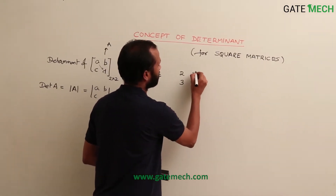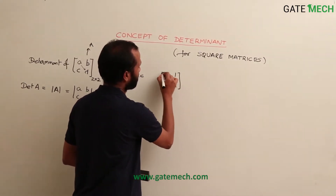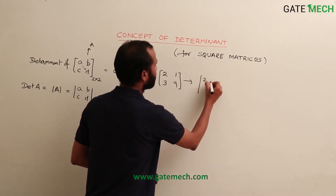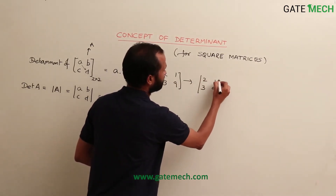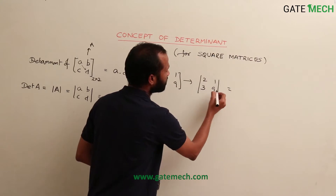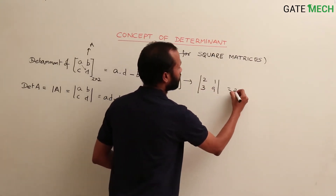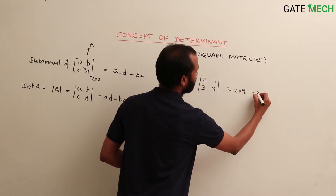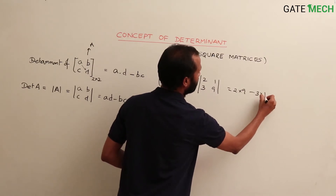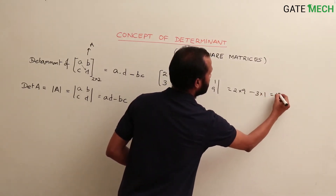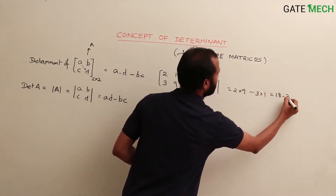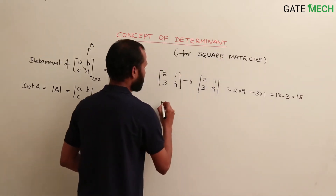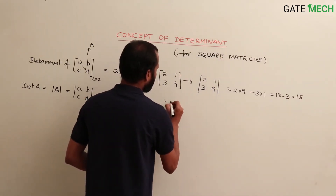One small example: take the matrix 2, 1, 3, 9. What is its determinant? That is 2 into 9 minus 3 into 1, which is 18 minus 3, that is 15.